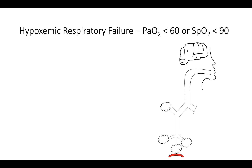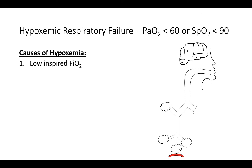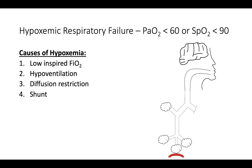First, acute hypoxemic respiratory failure. As previously stated, it is defined by an oxygen saturation less than 90% or PaO2 less than 60 mmHg on room air. Recall that there are five major causes of hypoxemia: low inspired oxygen, hypoventilation or decreased minute ventilation, diffusion restriction, shunt, and VQ mismatch. In the ICU, the vast majority of causes of hypoxemia are due to VQ mismatch.